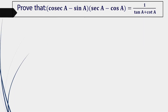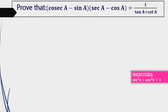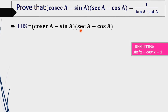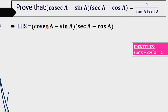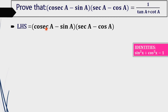First, take the LHS of this equation, that is (cosec(a) - sin(a)) × (sec(a) - cos(a)). Now we will simplify the LHS. To get it in the most simplified form, we will first change cosec(a) as 1/sin(a) and sec(a) as 1/cos(a).